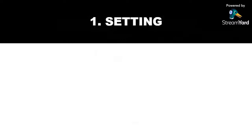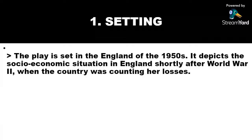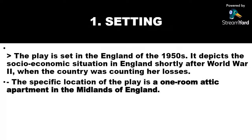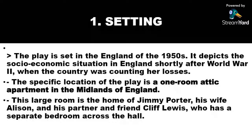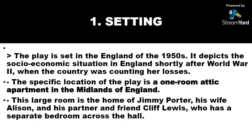I would like us to begin with the setting. The play is set in England of the 1950s. It depicts the socioeconomic situation in England shortly after World War II when the country was counting her losses. Setting includes place and time. The specific location is a one-room attic apartment in the Midlands of England. This large room is the home of Jimmy Potter, his wife Alison, and his partner and friend Cliff Lewis, who has a separate bedroom across the hall.